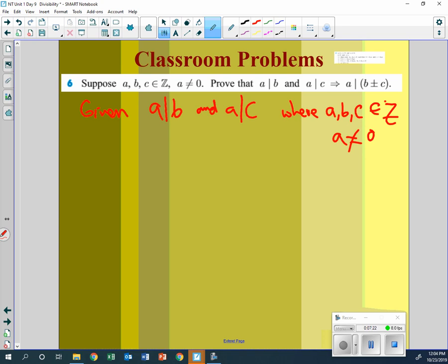So then, whenever you see a divides b, you can say that's the same as, which is bigger, a or b? B is the big, this is the little. So then, you can say b is equal to a times k1, where k1 is an element of the integers.